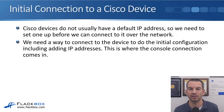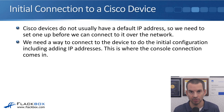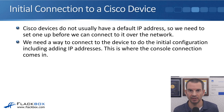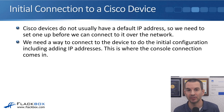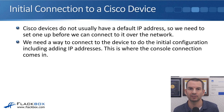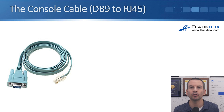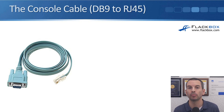With the console connection we can directly connect to the device at a lower level, below IP, get onto the command line, then do the initial configuration including adding the IP address, and once we've done that we'll then be able to connect to it over the network. For that initial direct connection you connect to the console port on the router or switch.